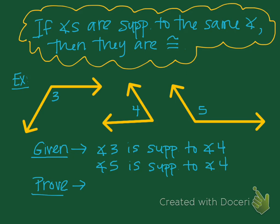The first theorem says that if angles are supplementary to the same angle, then they are congruent. We're told that angle three is supplementary to angle four — that means if I add them together, I get 180. We're also told that angle five is supplementary to angle four, so those two also equal 180. Since both angle three and angle five are being added to angle four to equal 180, we can say that angle three is congruent to angle five — they have to have the same measure.